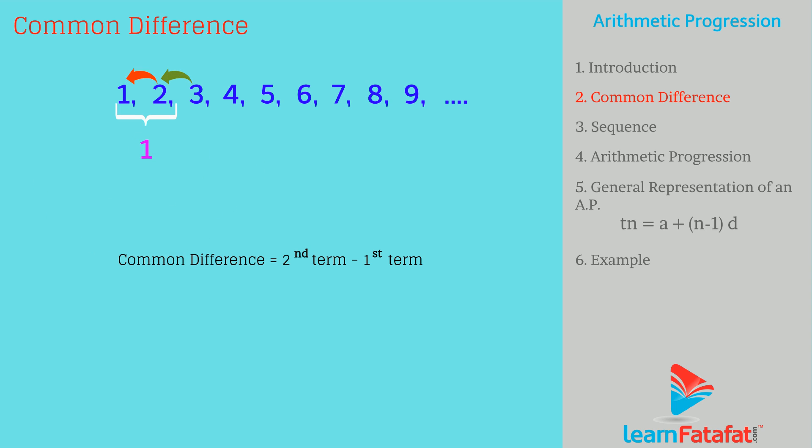Similarly, if you find difference between third term, that is 3, and its previous term, that is 2, then you will get same answer, that is 1. It means that the difference between the consecutive terms is 1. This difference is called common difference.